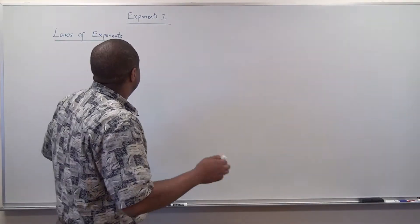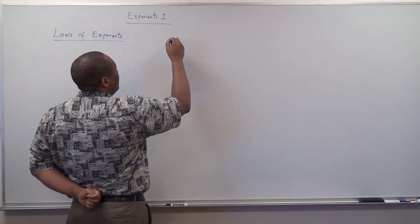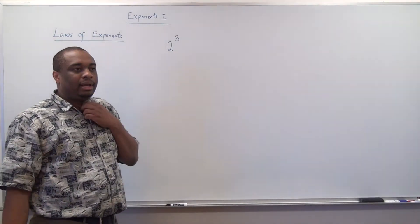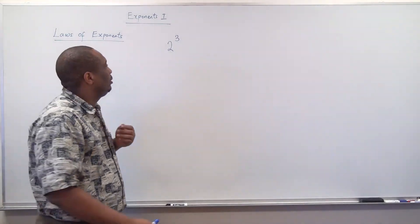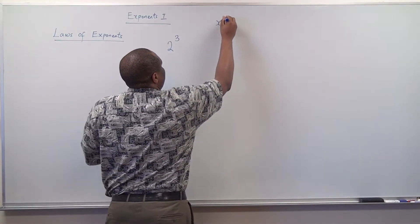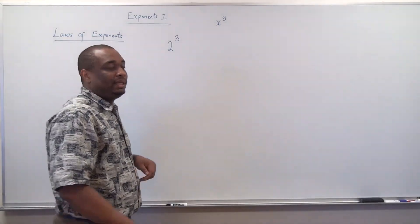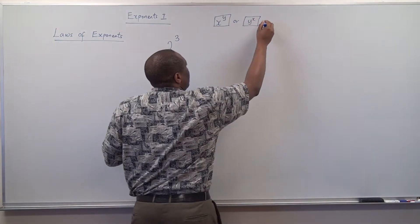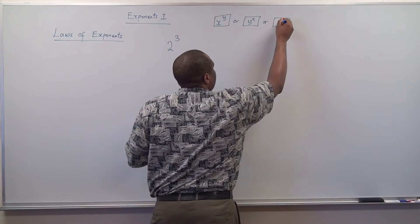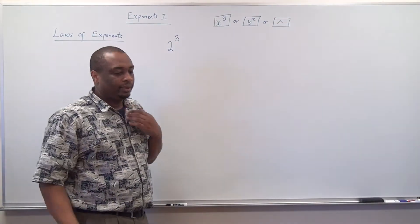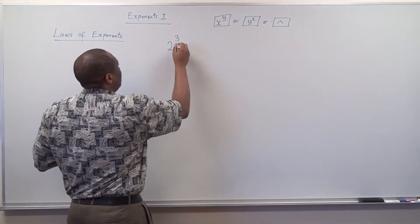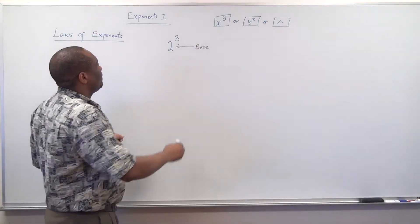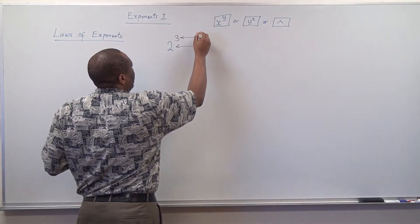When we look at this, for instance, if we have something like 2 raised to the top power, we see this kind of thing. And if you have your scientific calculator, you can see x raised to the power y, or y raised to the power x. This bottom one is what we call the base, and the top one is what we call the exponent.